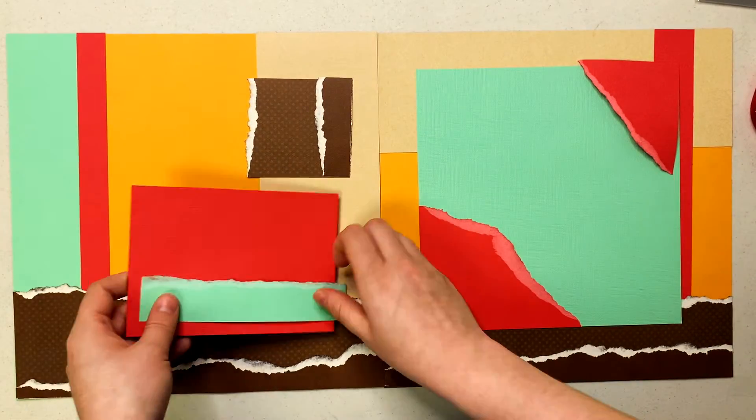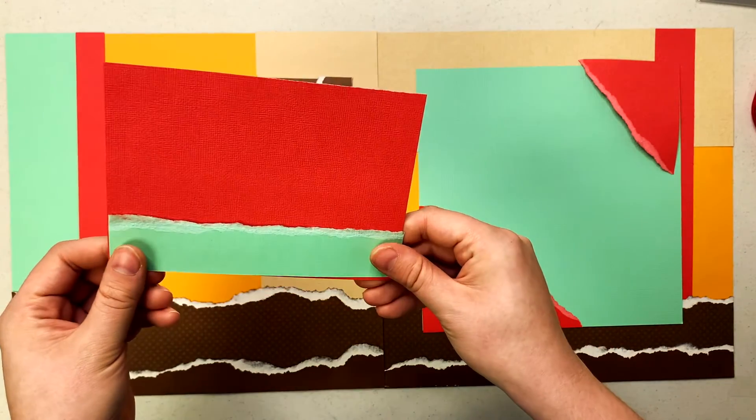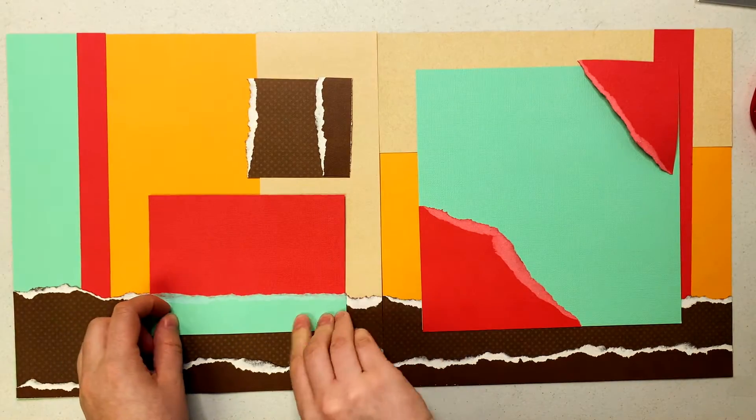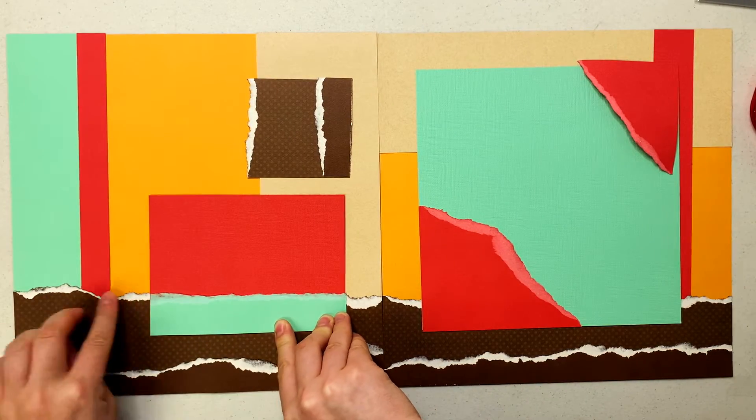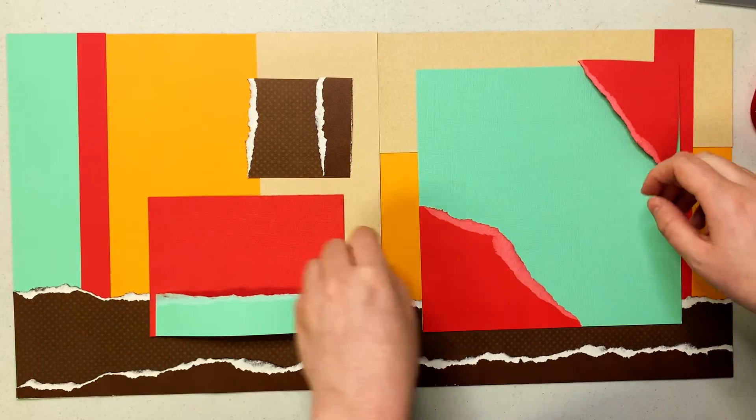This side I had some scraps left of the teal and some scraps left of the red and so I took a little piece and I just put it across the bottom here and I'm going to try and line it up with the ripping here so I can have some cohesiveness that way.